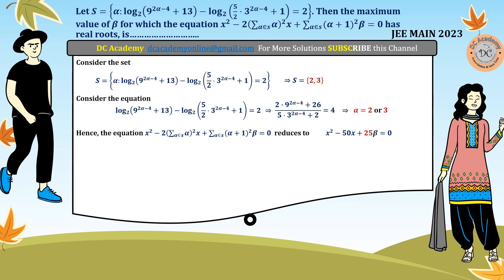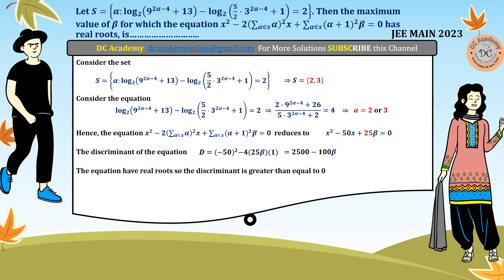For a quadratic equation to have real roots, the discriminant must be greater than or equal to 0. The discriminant is b squared minus 4ac, which equals 50 squared minus 4 times 1 times 25 beta, giving 2500 minus 100 beta. Setting this greater than or equal to 0 and dividing both sides by 100, we get 25 greater than or equal to beta, or equivalently beta is less than or equal to 25. Therefore the maximum value of beta is 25, which is the correct answer.